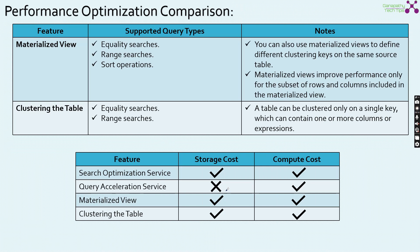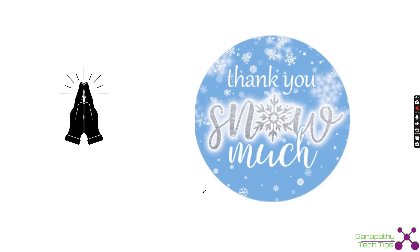An important differentiation in cost: for search optimization, materialized views, and clustering, you incur both storage and compute costs. For query acceleration, there is compute cost but no storage cost. This is because query acceleration does not persist any additional data structures — unlike search optimization which stores the search access path, materialized views which store precomputed results, and clustering which changes how Snowflake stores the data.